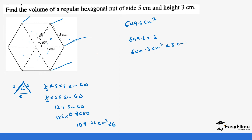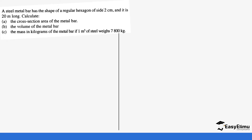...we get 1,948.5 centimeters cubed. Let's do another example: a steel bar has the shape of a regular hexagon of side 2 centimeters and is 20 meters long. Calculate the cross-sectional area. The only difference here is that the height and sides are different. Since it is six-sided, the angle at the center of each triangle is 360 divided by 6, which gives 60 degrees.